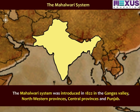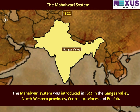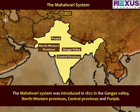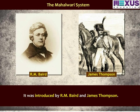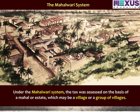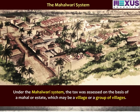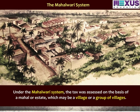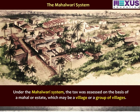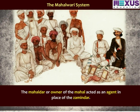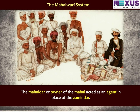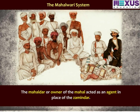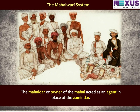The mahalwari system was introduced in 1822 in the Ganges Valley, northwestern provinces, central provinces, and Punjab. It was introduced by R.M. Baird and James Thompson. Under the mahalwari system, the tax was assessed on the basis of a mahal or estate, which may be a village or a group of villages. The mahaldar or owner of the mahal acted as an agent in place of the zamindar and was jointly responsible to pay the sum of revenue assessed by the government.